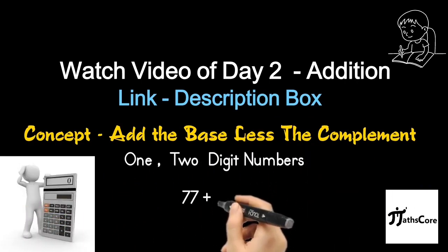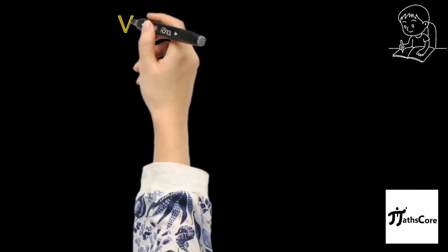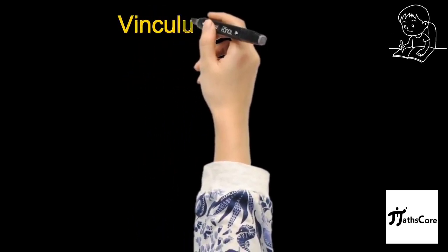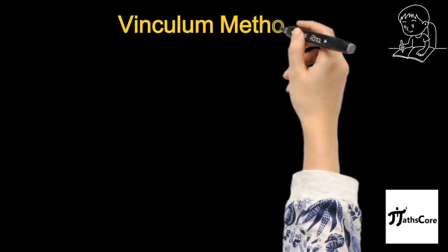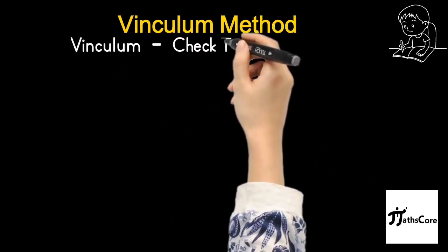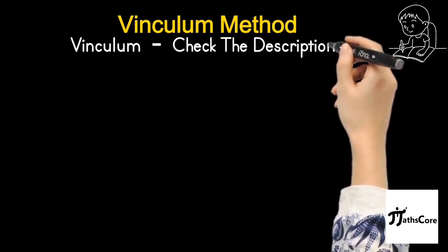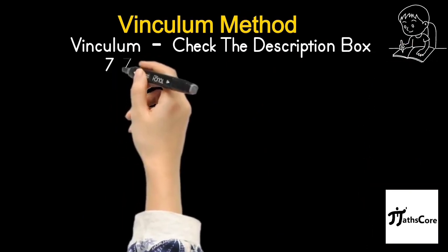Now by using the same concept, we will solve this example: 77 plus 2. To solve this problem we will be using the vinculum method. If you are not familiar with what vinculum is, don't worry. I have made a video explaining it which you can watch first, and then solve this example easily. The video link is given in the description box.